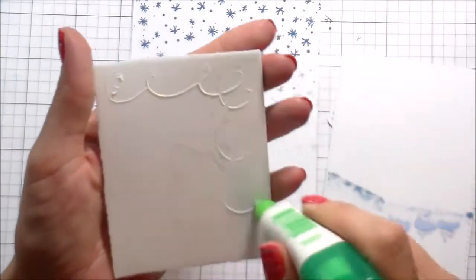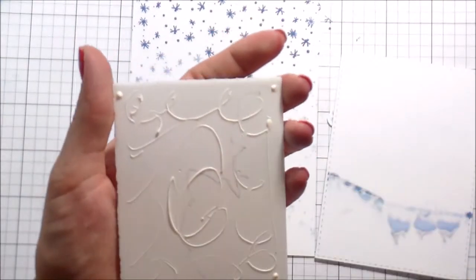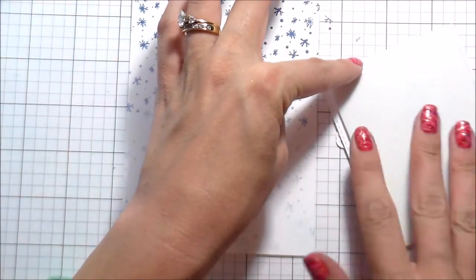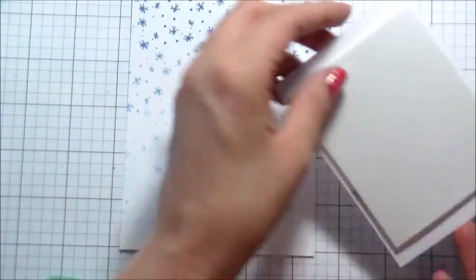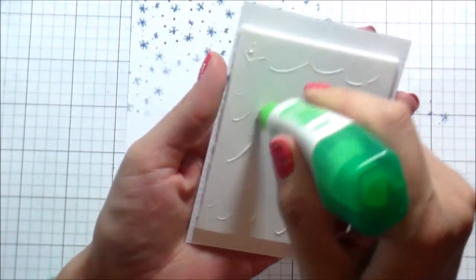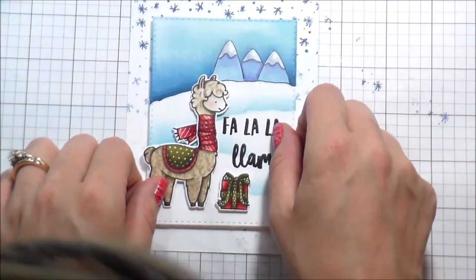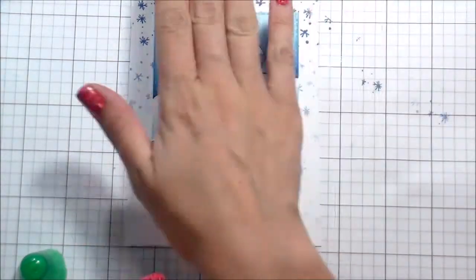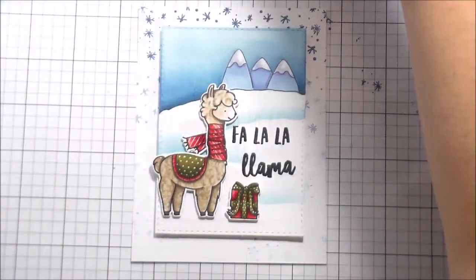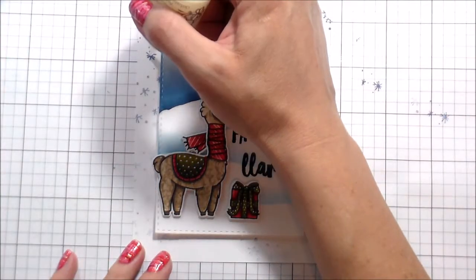I'm going to pop this up. So doubly popped up card here. Aren't you proud of me when I normally do the one layers? And here I got two layers, three layers, three layers of things. I'm awesome. So I'm just using some white fun foam to pop that up over that background. Once I was happy with placement, I'm going to move on to just adding a little bit of something to the background.